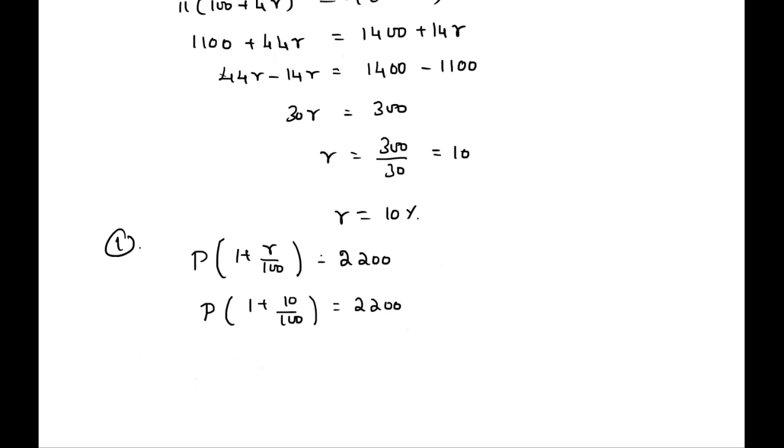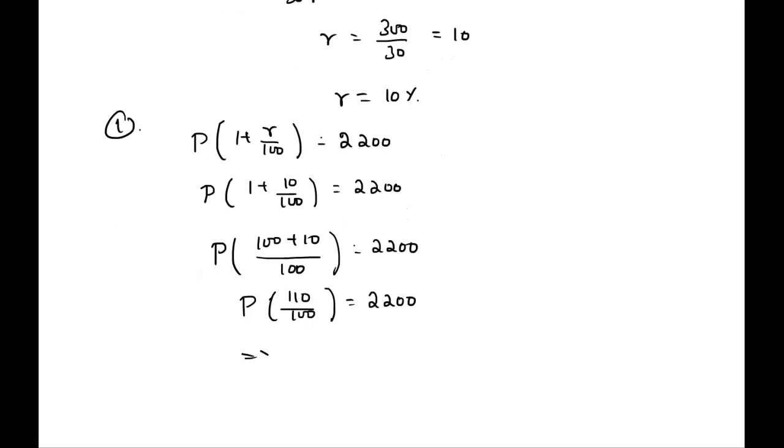This implies P times (100 plus 10) divided by 100 equals 2200. So P times 110 divided by 100 equals 2200, which implies P equals 2200 multiplied by 100 divided by 110.